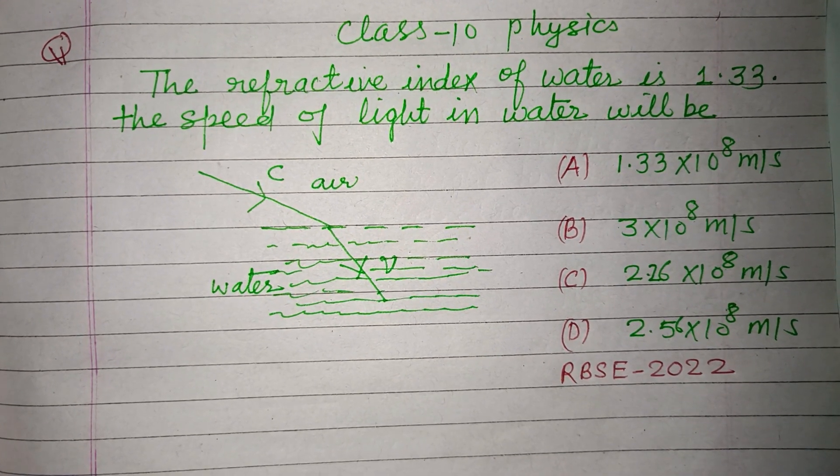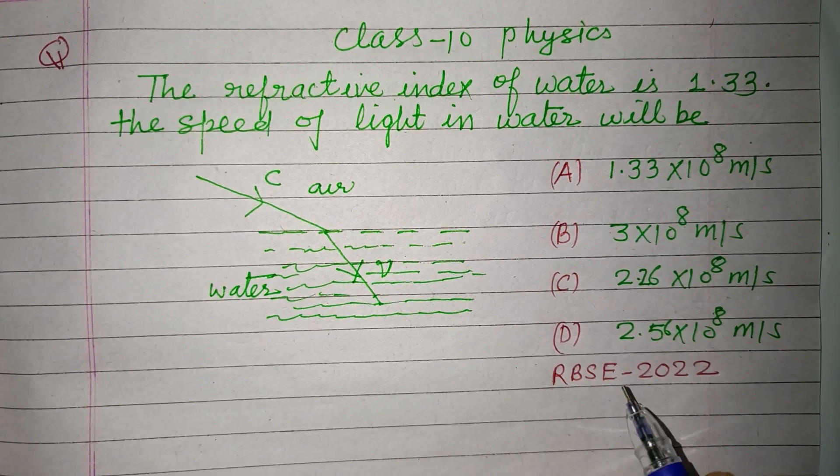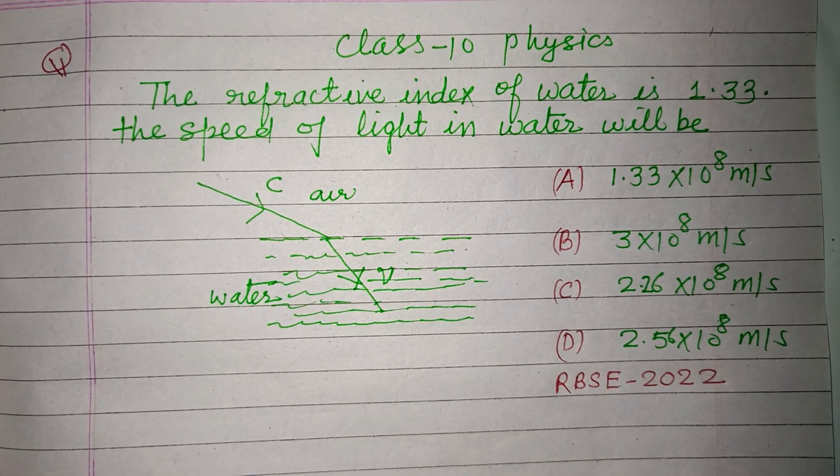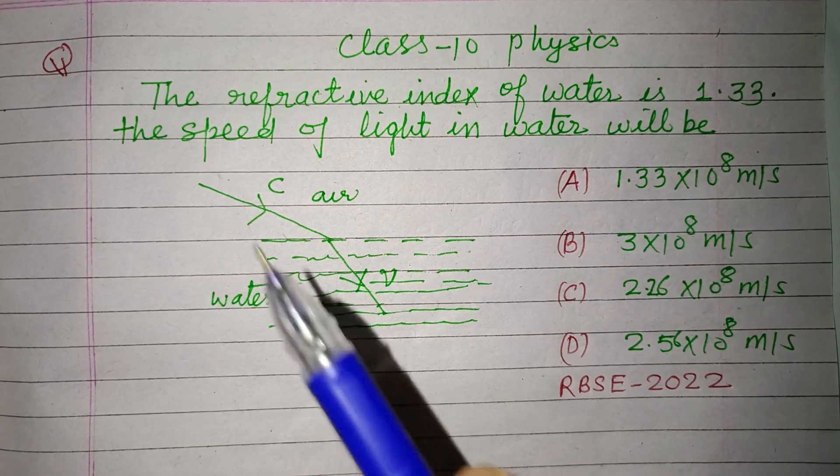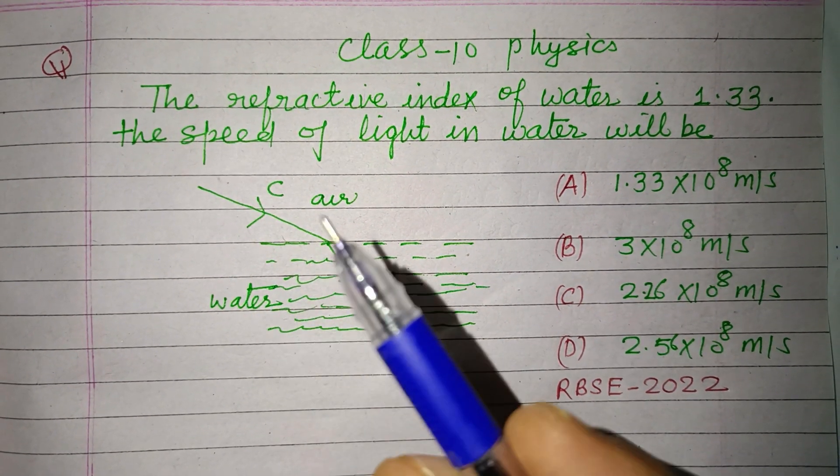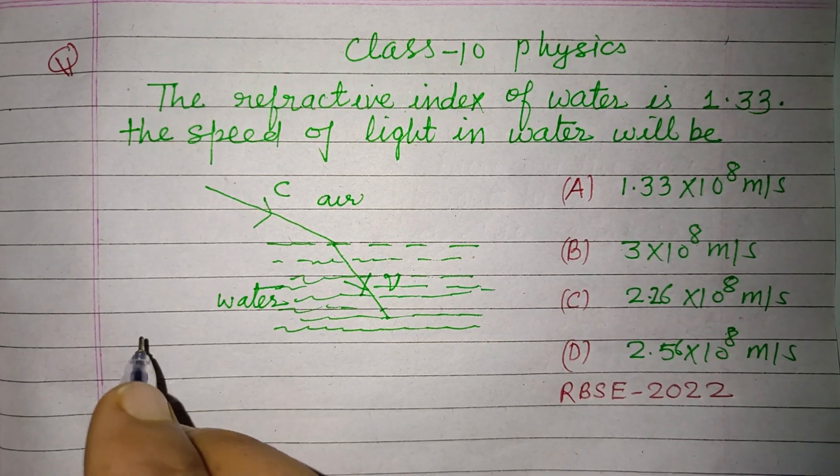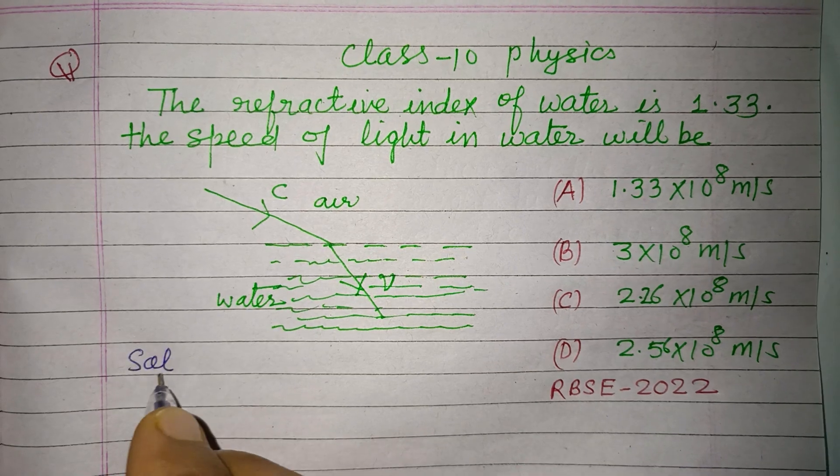Hello viewers, warm welcome to this YouTube channel. This question is from Rajasthan Board of Secondary Education Class 10 2022 board exam. The refractive index of water is 1.33. The speed of light in water will be...